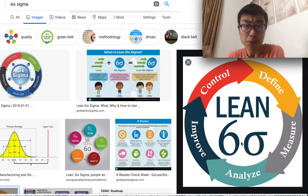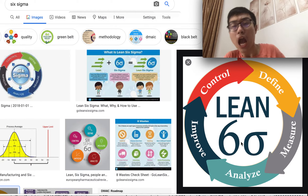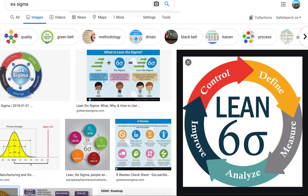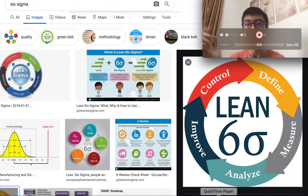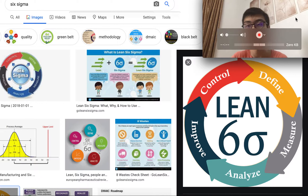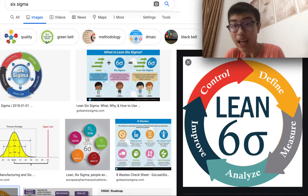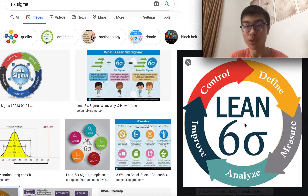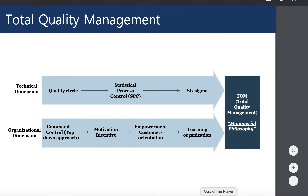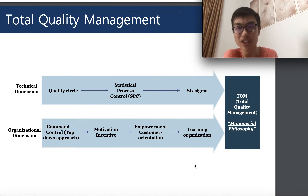The first process in Six Sigma is Define. After defining, we Measure the problem, then Analyze it with statistical measures — which can be our application of SPC. After analyzing, we Improve the product, and finally we Control. This is the DMAIC process of Six Sigma. Although it has five parts, it is called Six Sigma. These are the processes for the technical dimension of quality management.